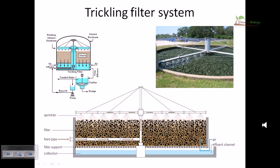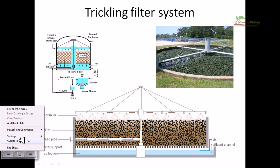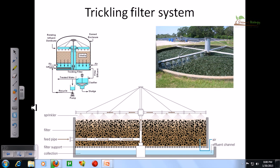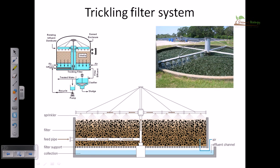Hello friends. In this video tutorial I am going to talk about a very important way of utilizing the secondary treatment of wastewater treatment plant. This is called a trickling filter system. Utilizing this trickling filter system, one can easily manipulate the concentration of different matters in wastewater.